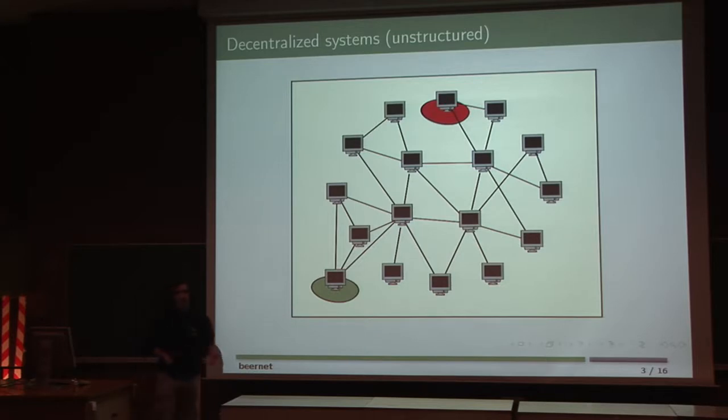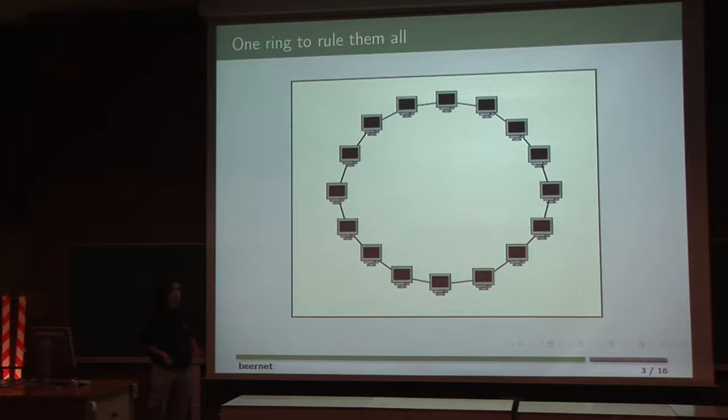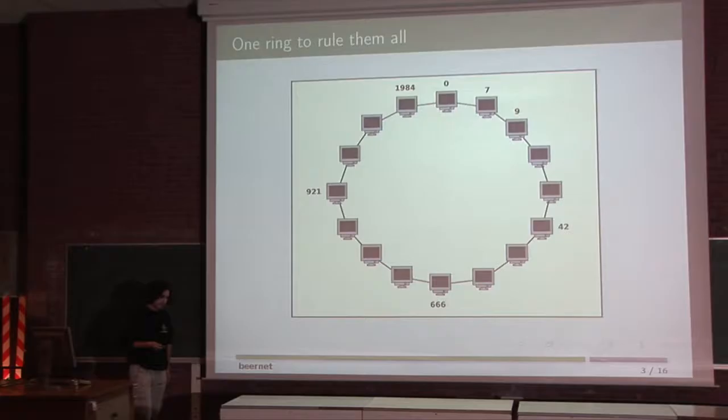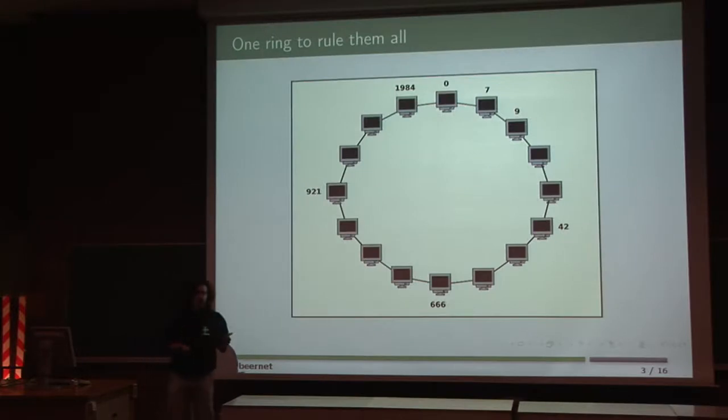The rule is to assign an identifier to every peer and to put them into a ring. The identifier allows you to connect to your predecessor and your successor, following the order of the numbers. This ring is also one ring to find them, because you can have some special connections to jump significantly into your ring, so it's efficient for routing.